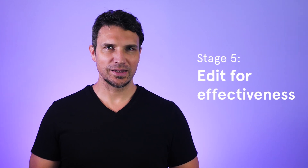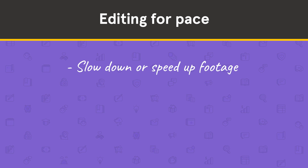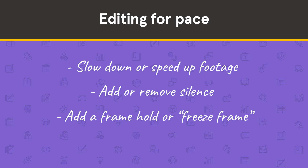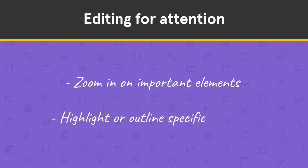Stage 5: Edit for effectiveness. Even with a concise script and well-performed screen recording, we can still improve our viewers' experience in the editing process. We're going to consider two things: the pace of the instructions and where we're directing our viewers' attention. For pace, you can slow down or speed up footage to match the voiceover, add or remove silence to avoid dead space, add a frame hold for screenshots that need to remain static while you explain something, and use transitions to skip page loads or denote a new section. To direct your viewer's attention, zoom in on sections or elements the viewer should interact with, and highlight specific sections — I do this by adding a clear shape with a red or white outline.